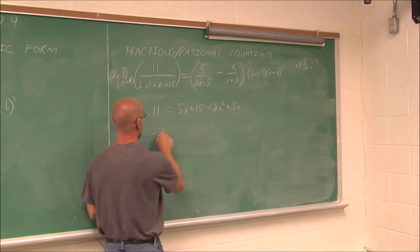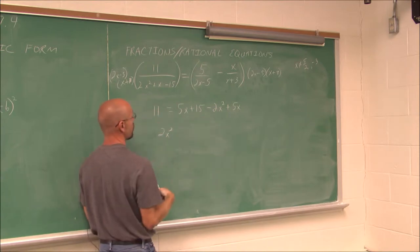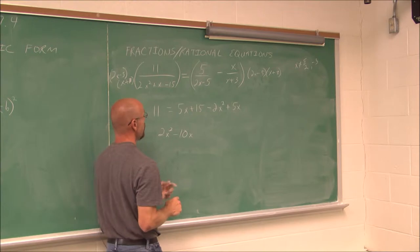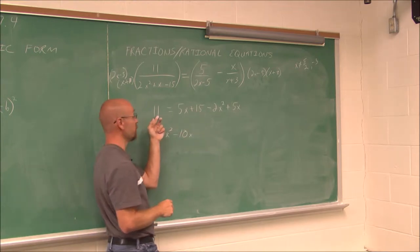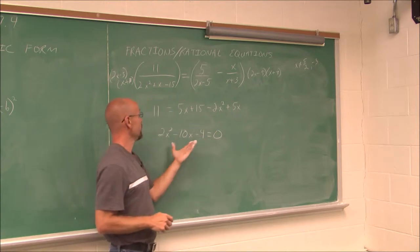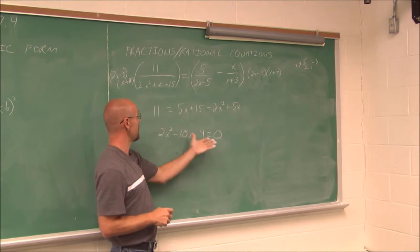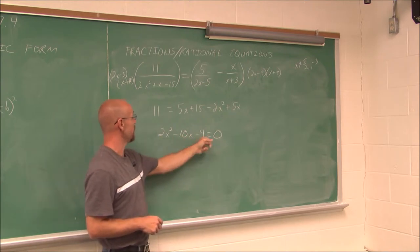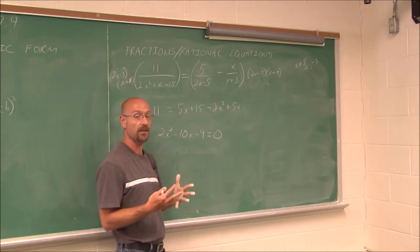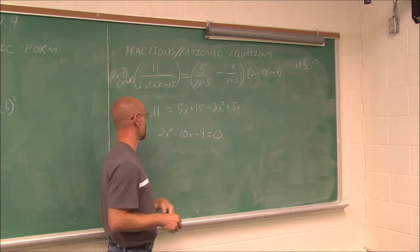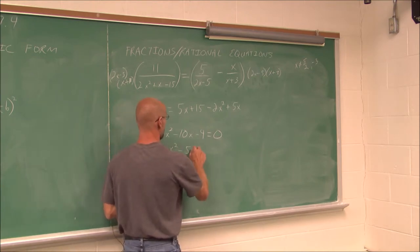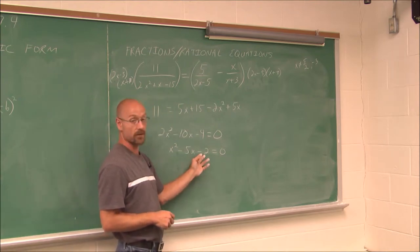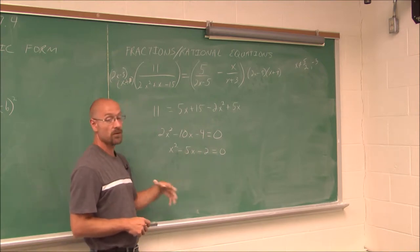I'll set this equal to 0, since that's how we work with quadratics. I add 2x² to both sides, combine like terms to get 10x, subtract from both sides, and subtract 15. With the constant 11 on the other side, I get negative 4, giving me 2x² − 10x − 4 = 0. All terms have a factor of 2, so dividing through by 2 gives x² − 5x − 2 = 0. There are no factors of negative 2 that have a difference of 5, so factoring won't work.